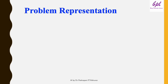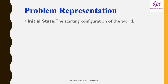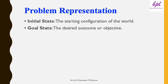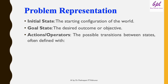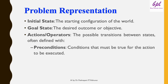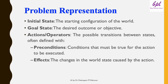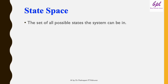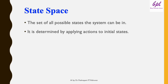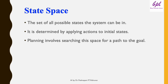A planning problem in AI is defined by three main elements: the initial state, the goal state, and the set of actions available. The initial state is the starting configuration of the world. The goal state is the desired outcome or objective. Actions or operators are the possible transitions between states, often defined with preconditions and effects. Preconditions are the conditions that must be true for the action to be executed, and effects are the changes in the world state caused by the action.